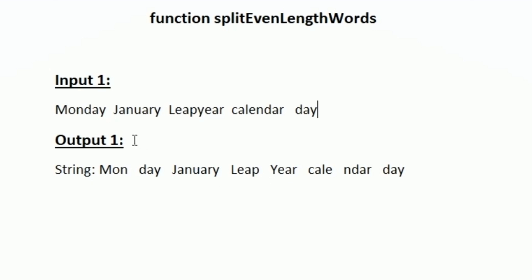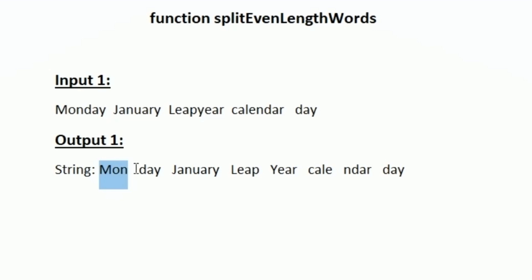If a word is of even length, we have to split it into two. The first word is Monday, which has six characters — even — so we split it: the first three characters form one string and the last three form a separate string. In the output, we print M-O-N and then D-A-Y with a space between them.